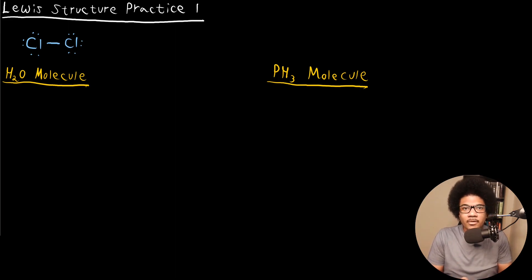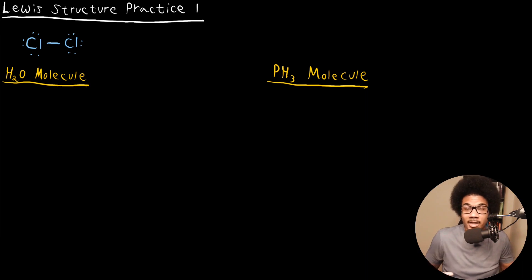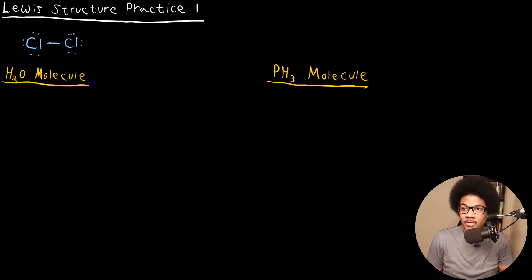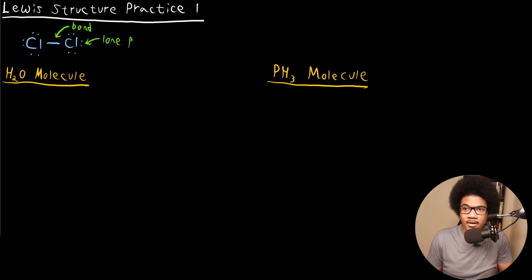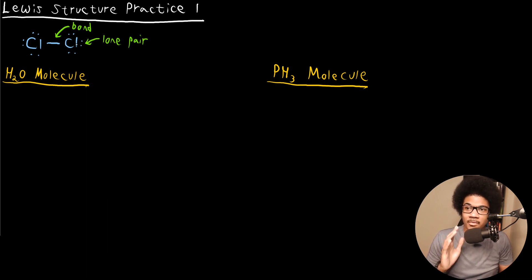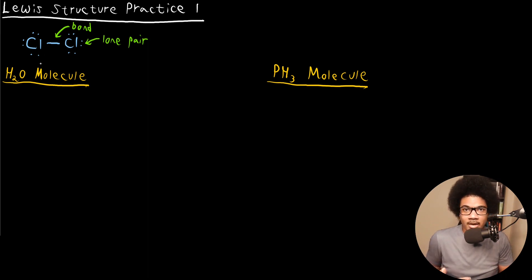In this video, we're going to practice making Lewis structures for different molecules and give you a few general tips as far as how to solve these problems, how to construct Lewis structures for any molecule. In a previous video, we looked at a very simple Lewis structure for the Cl2 molecule, which includes two chlorine atoms each sharing a single electron to form the bond. A proper Lewis structure has dashes to denote bonds in the molecule, and it accounts for all of the lone pair electrons.